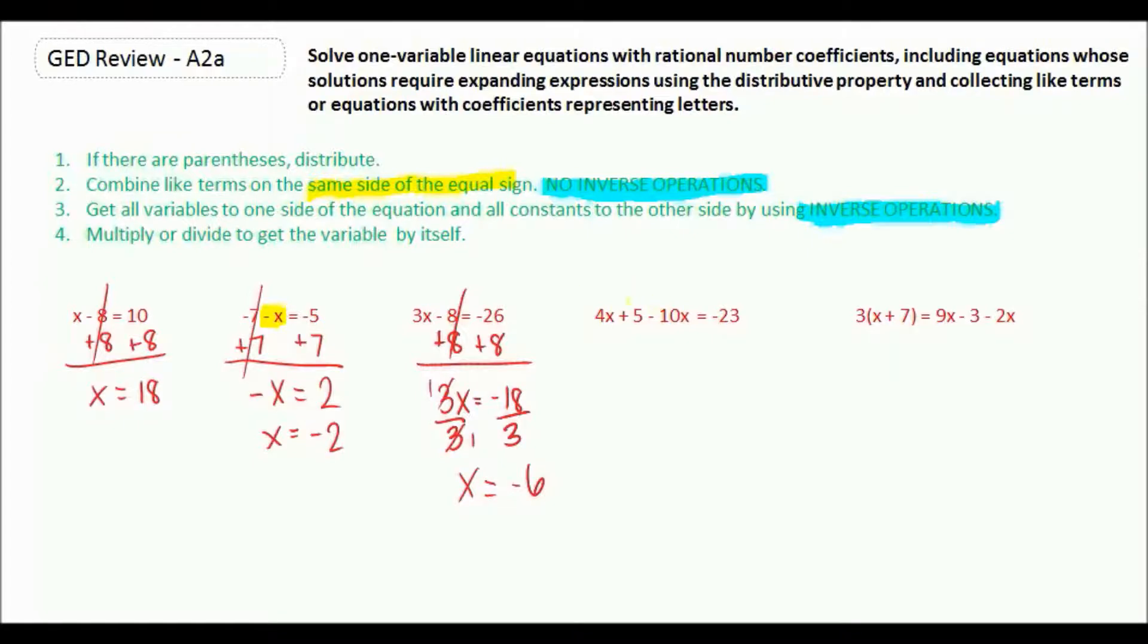Here, if we're looking at the left-hand side, we have a lot going on. So we need to combine our 4x and our negative 10x. And notice, since they're on the same side of the equal sign, we are just doing what the signs tell us to do. There is no inverse operations yet. So 4x minus 10x is negative 6x plus 5, and that equals negative 23. Two-step equation, let's get our constants to the right side. To get rid of plus 5, we subtract 5. So we have negative 6x equals negative 28.